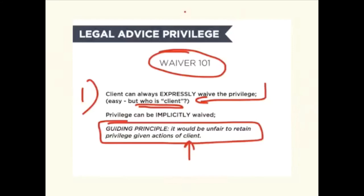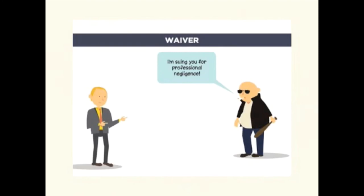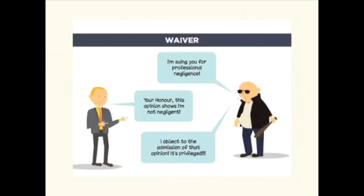The easiest situation of unfairness: when a lawyer and client have a falling out and the client wants to sue the lawyer for professional negligence. The lawyer's defense depends on showing the legal work they actually did. Would it make sense if the client — who owns the privilege — could object to the admission of the opinion on grounds that it's privileged? Of course not. The lawyer needs to be able to defend themselves by showing the communications that took place. So an attack on the lawyer usually amounts to a waiver of any privileged material relevant to showing the lawyer's good faith and acting within the scope of their retainer.